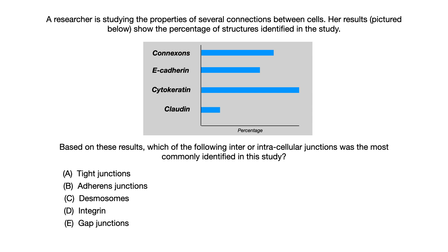Pause the video if you want some time to think about this practice question. Alright, let's start to go through this now. We've got a graph basically showing us the percentage of times that the structures shown in that gray box in the graph were identified in the study.